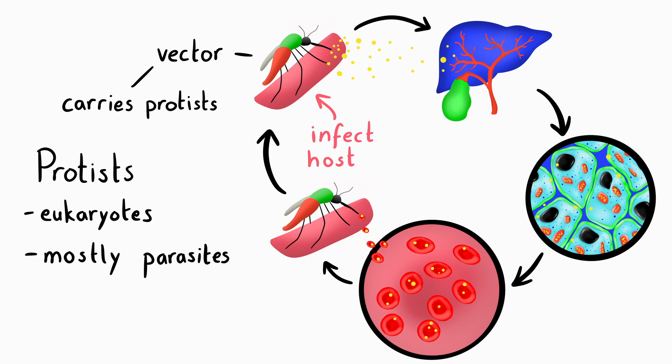Many protist infections reach humans through carrier organisms called vectors. These carriers transport the pathogen without becoming ill themselves.